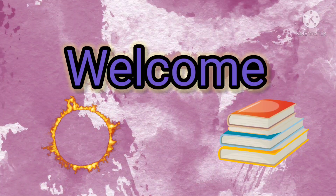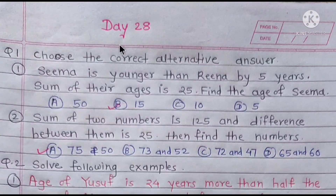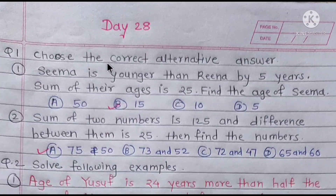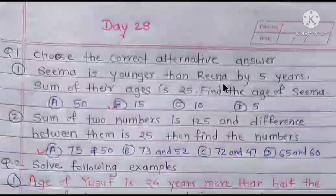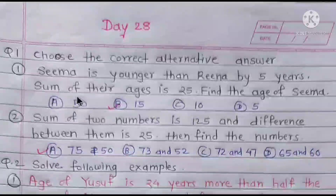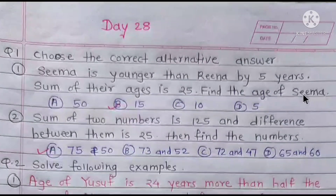Hello dear students, welcome back in my channel. Day 28, first question — choose the correct alternative answer. First: Sima is younger than Rina by 5 years. Sum of their ages is 25. Find the age of Sima.